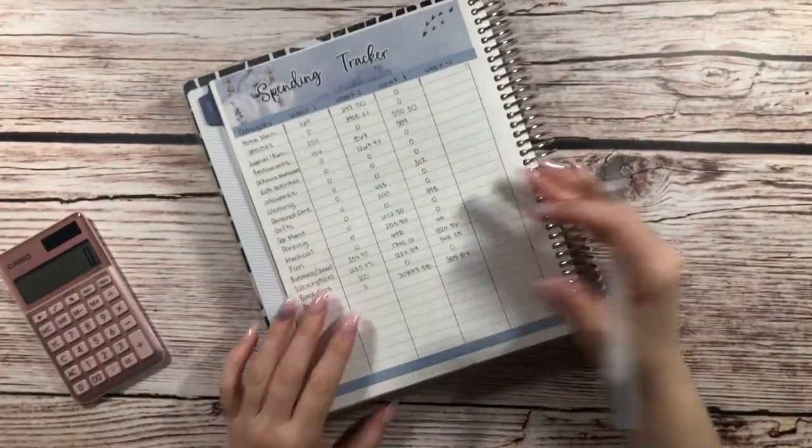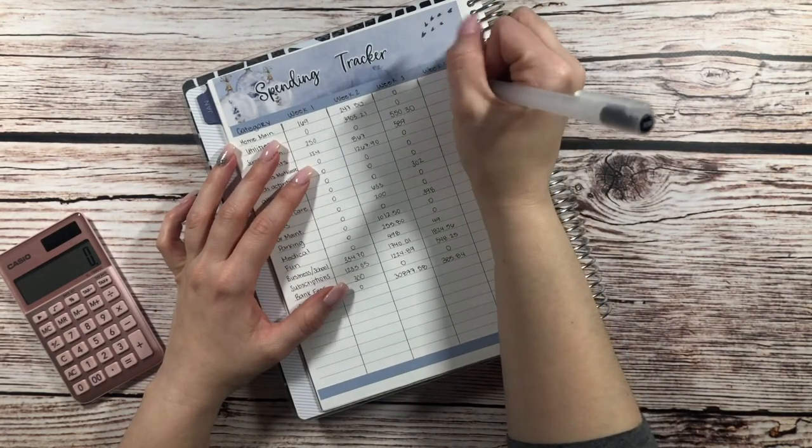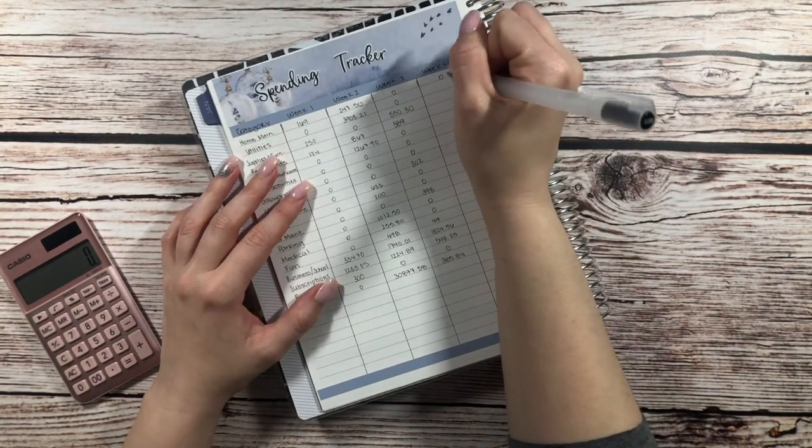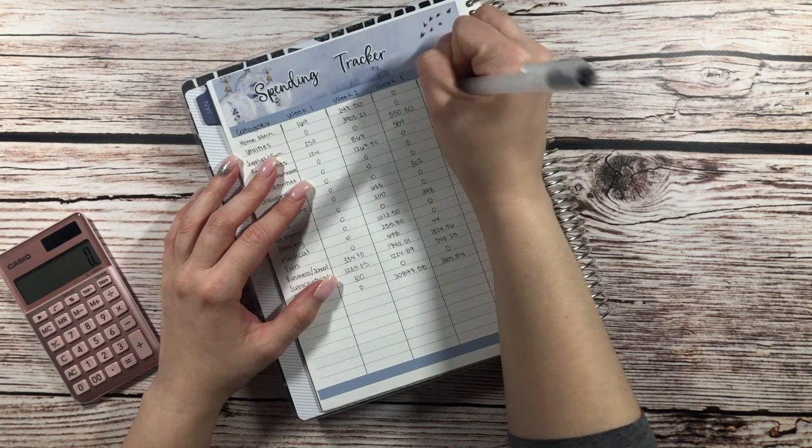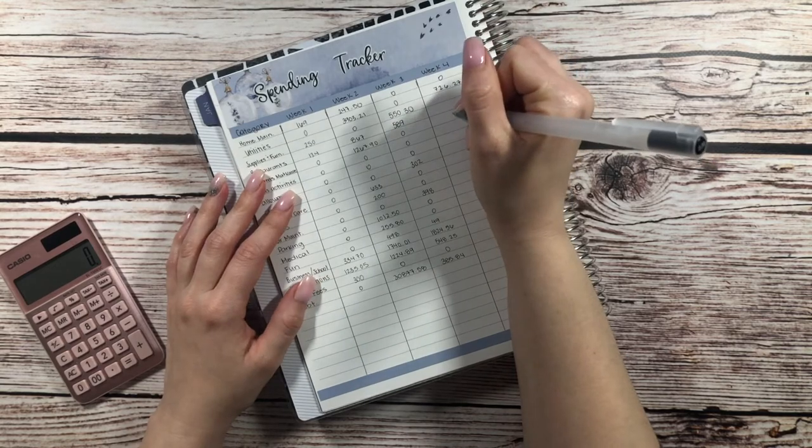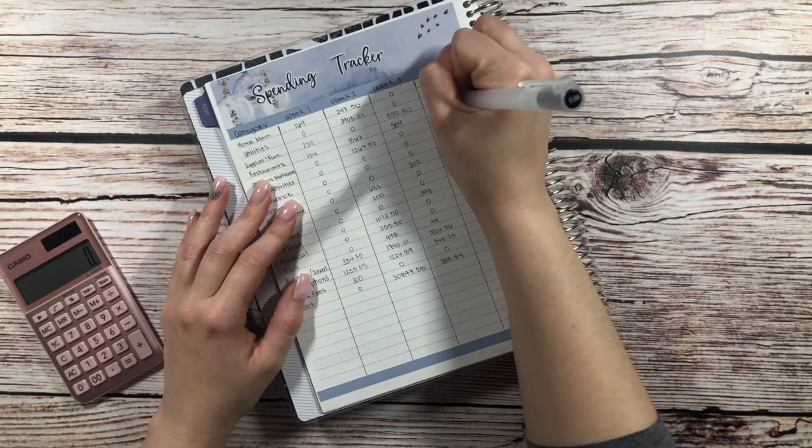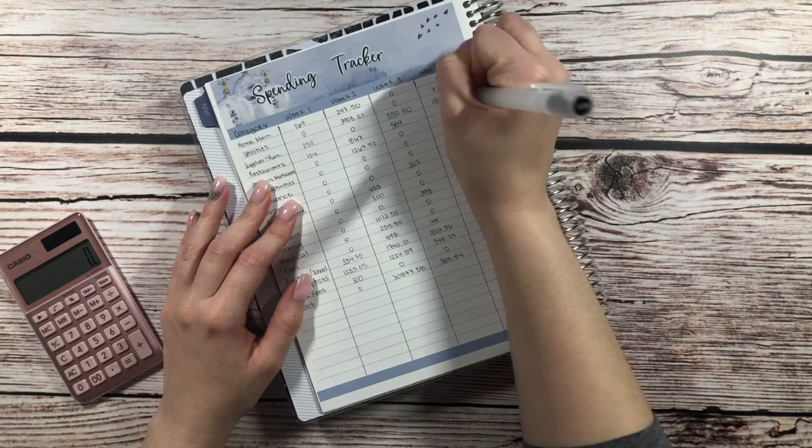And then we're just going to flip over and do our spending tracker for the rest. For home maintenance, we had zero. For utilities, our actual utilities were 726 kroner. Supplies, this is the same thing. This is for the cabin.